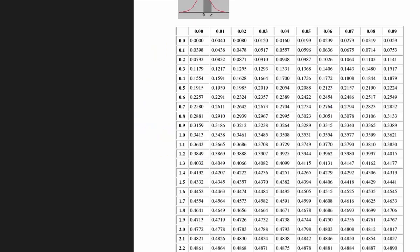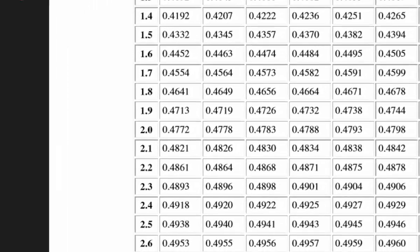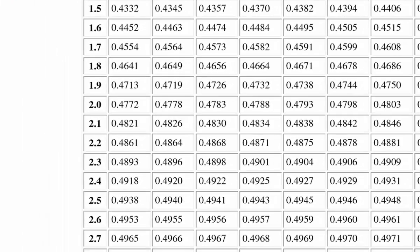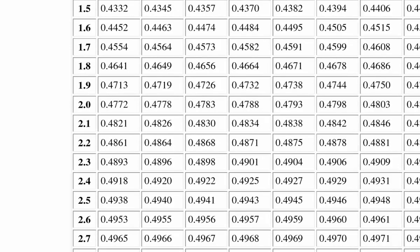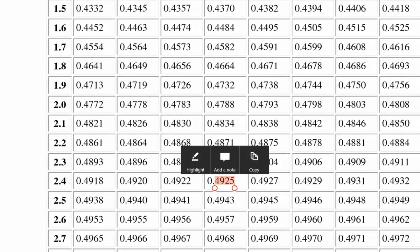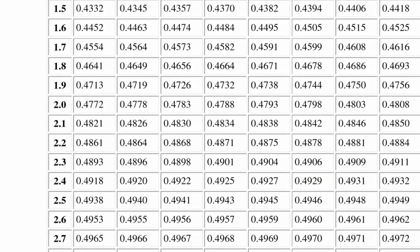Let's find the 2.4 in the leftmost column first, and then to find 2.47 we just move over. The first position is 2.40, and then 1, 2, 3, 4, 5, 6, 7.